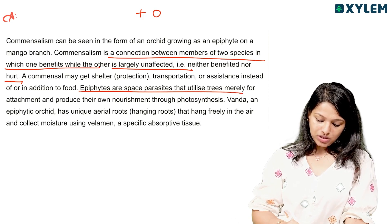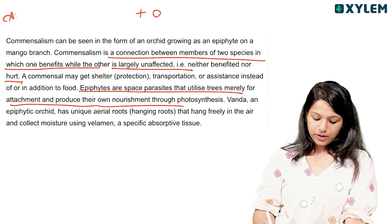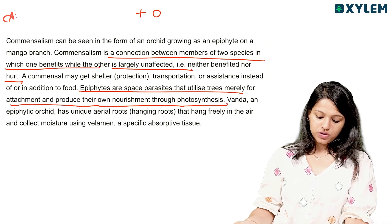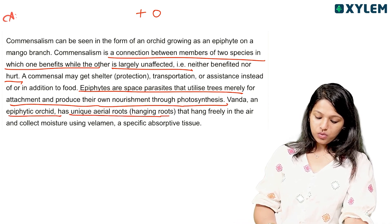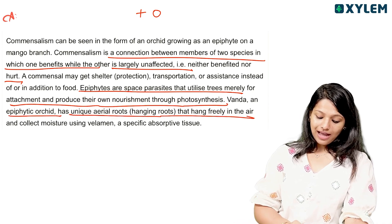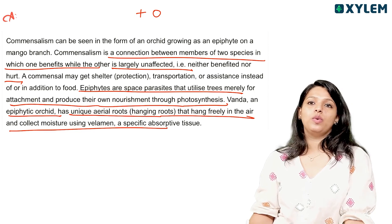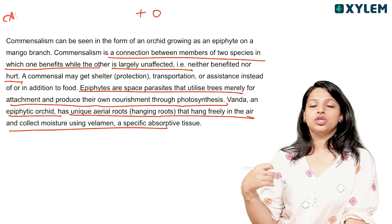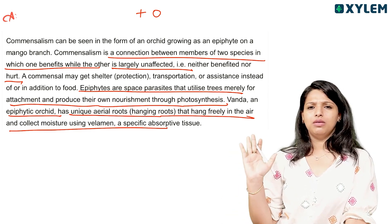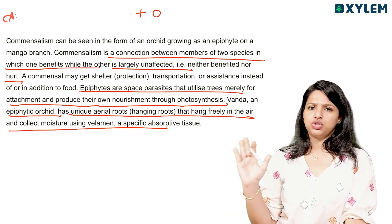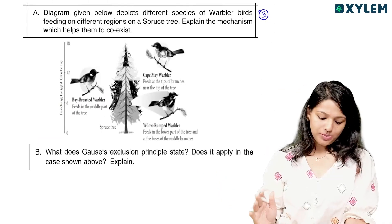Epiphytes, like the orchid, are space parasites that utilize trees merely for attachment while producing their own nourishment through photosynthesis. Vanda and other epiphytes have unique aerial roots that hang freely and absorb moisture from the air using velamen. They do not harm the mango tree, which is why this interaction is commensalism.